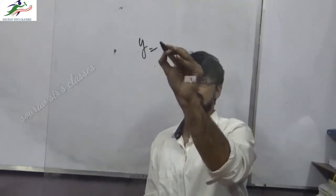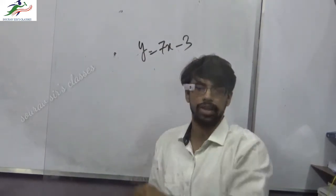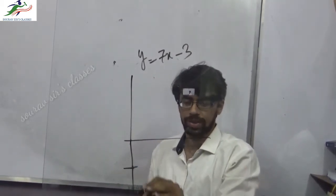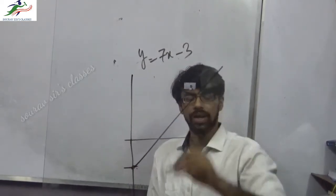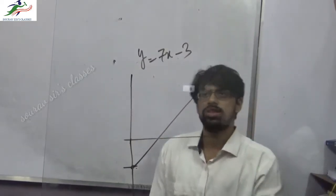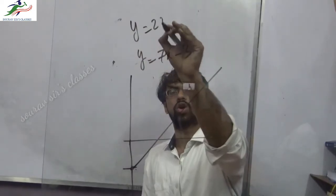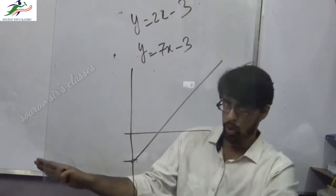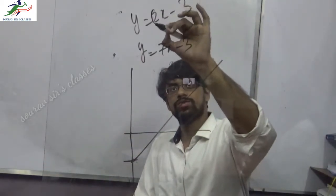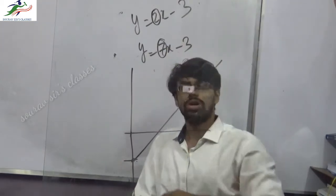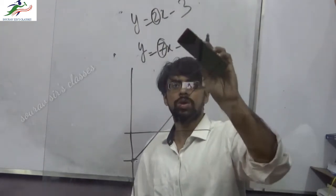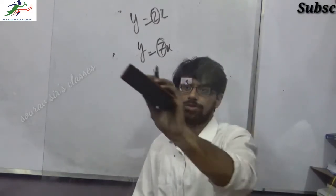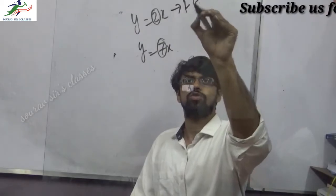For example, take y equals 7x minus 3. Since the intercept is minus 3, you start from the lower area, and since the slope is positive it goes upward. Now if I also draw 2x minus 3 in the same graph, the answer is no — they won't be the same graph. The slope is different: 7x versus 2x gives a different steepness.